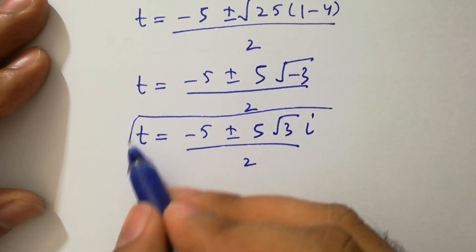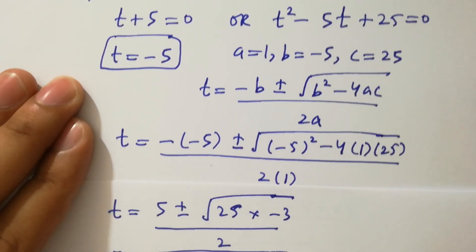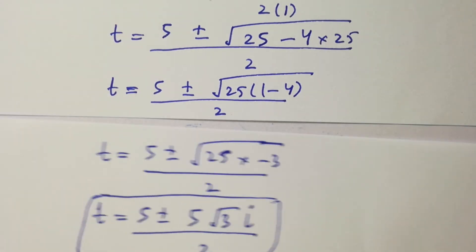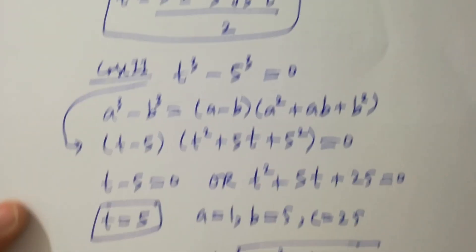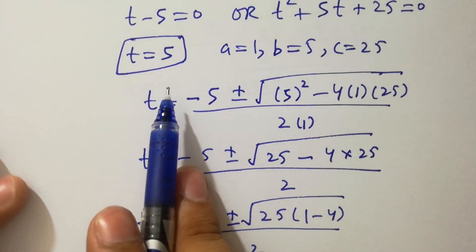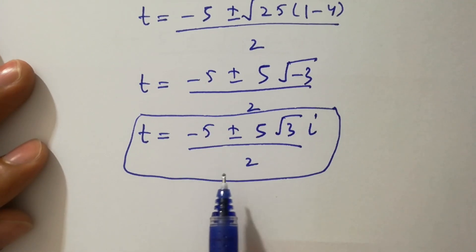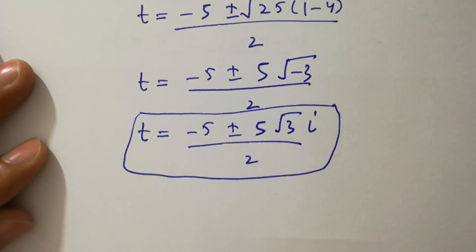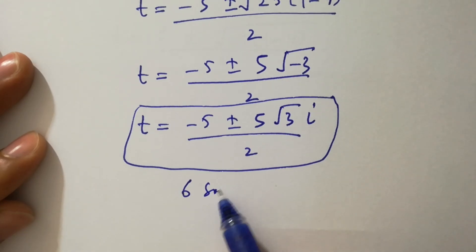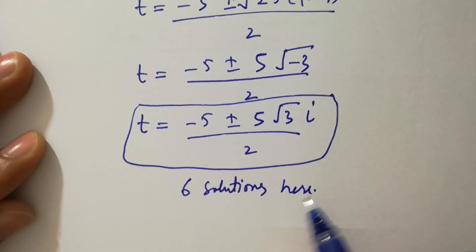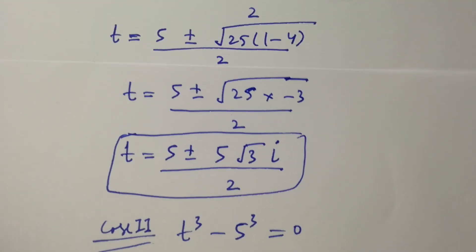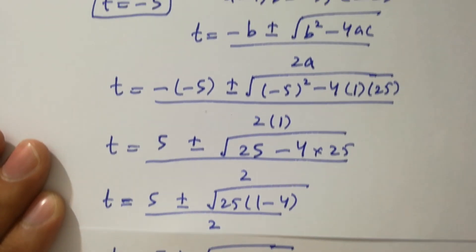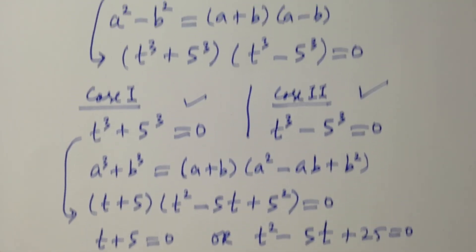These are also our two complex solutions. So finally, t equals minus 5, t equals 5, and t equals minus 5 plus or minus 5 square root of 3 i over 2, giving us six solutions in total. Thanks for watching this video. Please subscribe to this channel to get notifications of my new videos, and don't forget to share these videos with your classmates and friends so they also benefit. Bye!